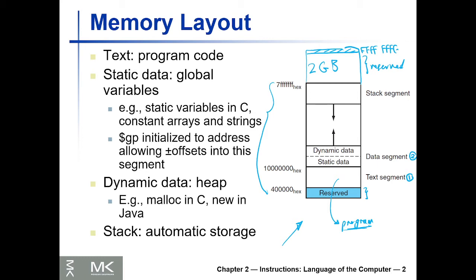The second portion is called the data segment, which is divided into two parts. The first is the static data segment, where we store static variables — essentially global variables with fixed sizes. For example, in a C program, a variable X declared as an integer before the main function is a global variable visible to all functions, and it will always be stored in the static portion.